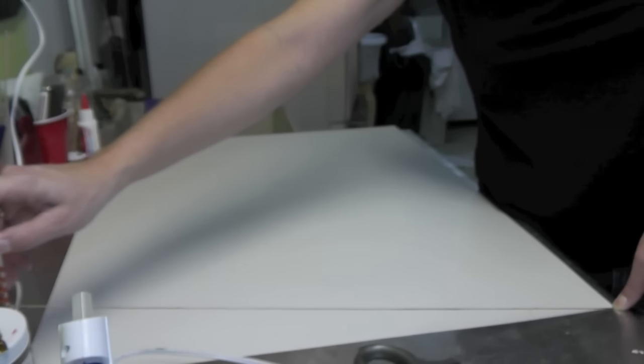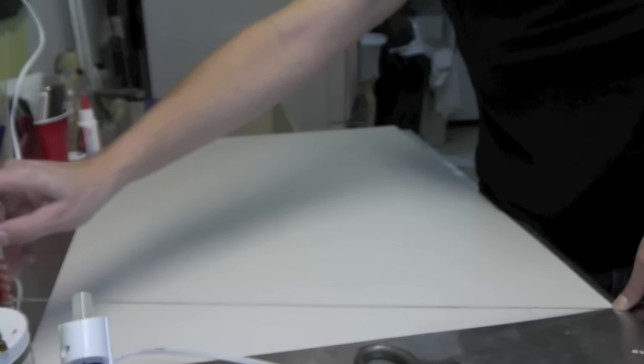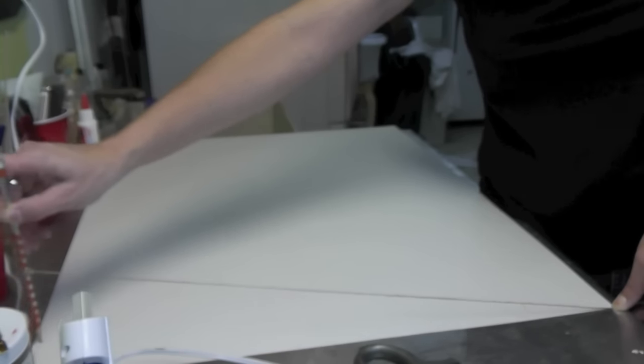So all you're going to do is come around, and you want to hold your pencil very straight. And now you have your quarter circle.